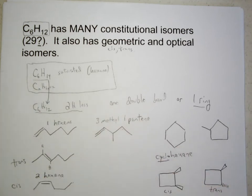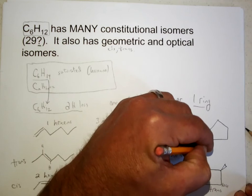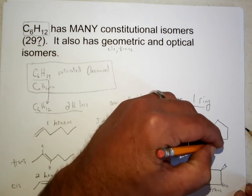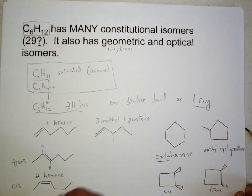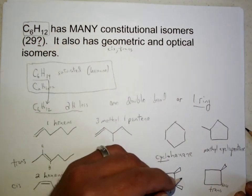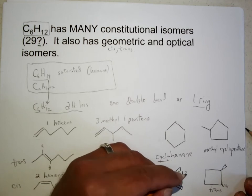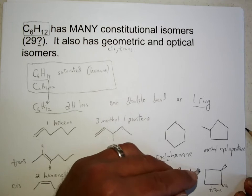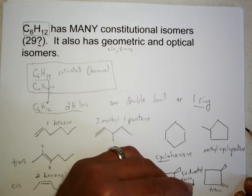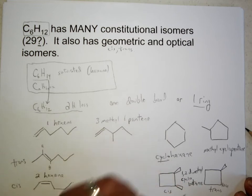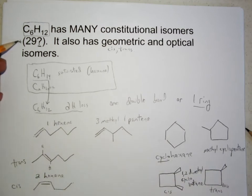So cyclohexane, methyl cyclopentane, and then here we have cis and trans one, two, dimethyl cyclopentane. The point is not to try to do exhaustively all 29 constitutional isomers and all the geometric and optical possibilities.